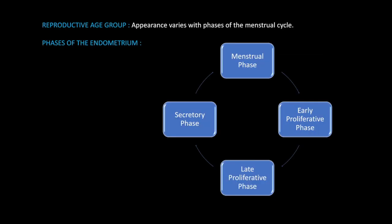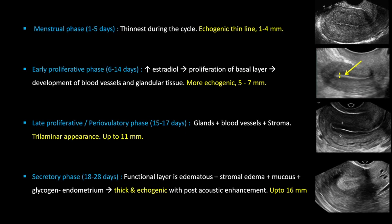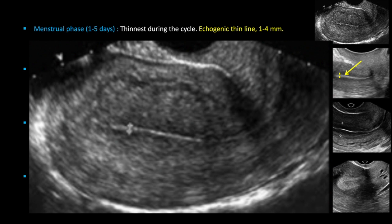There is a change in the endometrial lining during the various phases of the menstrual cycle. There's the menstrual phase at the beginning, then the proliferative phase with early and late sub-phases, and the secretory phase. The menstrual phase lasts from day one to day five; during this time the functional layer has shed, the endometrium is thinnest, appearing as an echogenic thin line measuring one to four millimeters.